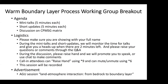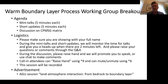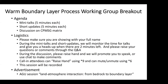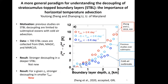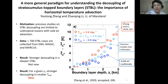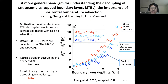The first speaker is Yutong Zheng from the University of Maryland, presenting on decoupling of stratocumulus-topped boundary layers. Today's talk focuses on the importance of horizontal temperature advection. This work is motivated by the fact that most previous studies on decoupling of the marine boundary layer are in conditions of cold air advection, where clouds are advected from cold to warm water.